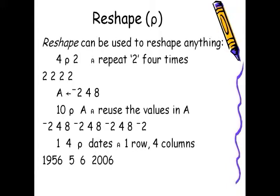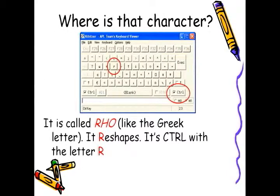Reshape can be used to reshape anything. For example, we can reshape the number 2 four times, so we get a list of four numbers which are all the number 2. We can also reshape variables as can be seen here. So where is that character? It is called rho, like the Greek letter. It reshapes and to get it you have to use control with the letter R.